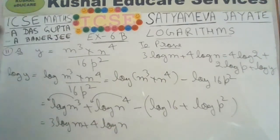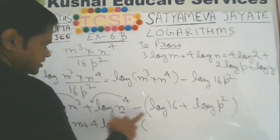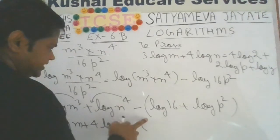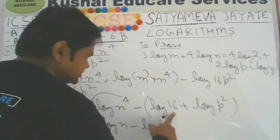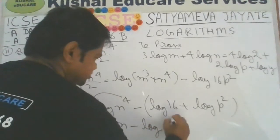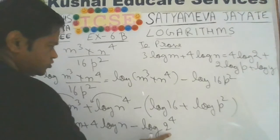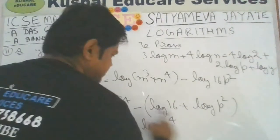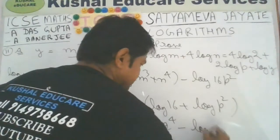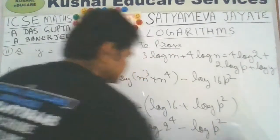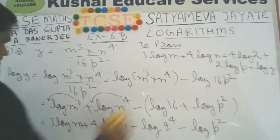Now simplifying: the 3 comes in front as a multiplier, so it's 3 times log m, plus 4 times log n. Then we open the bracket: minus log 16. Now 16 is 2 to the power 4, and because of the minus, the sign also changes — it will be minus log p squared.